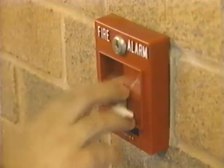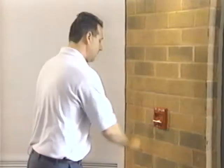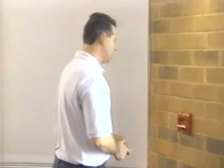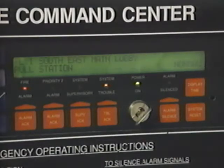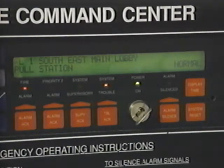Manually test fire alarm boxes following manufacturer's recommendations. A demonstration confirms alarm receipt at the control station — for example, a pull station on the first floor, main entrance.